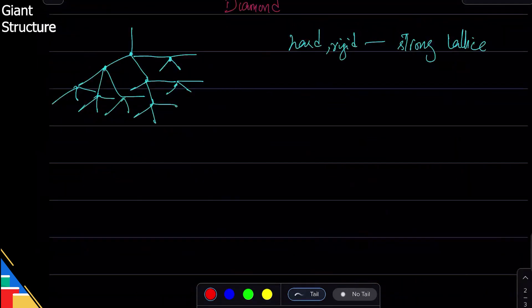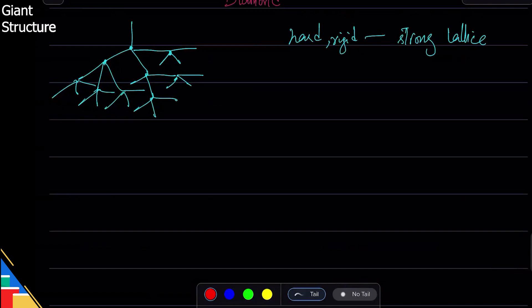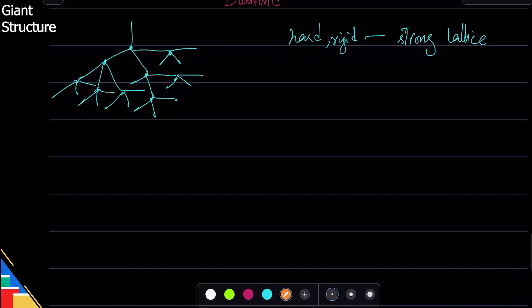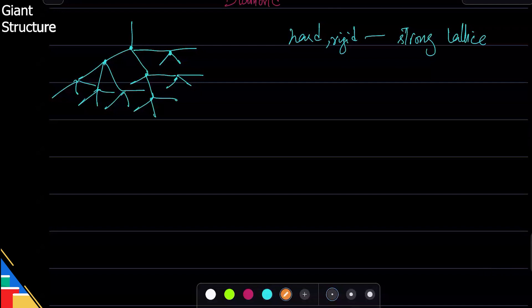On the other hand we have diamond. This is where we stopped yesterday. Diamond has a rigid structure, it is hard, and it's one of the—in fact it's the hardest natural substance that we have. The structure here is tetrahedral.